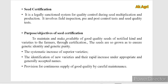The main objective of seed certification is to maintain and make availability of good quality seeds of notified kind to the farmers through seed certification. Notified varieties are nothing but the varieties which are registered with the Government of India. The objective also includes systematic increase of superior varieties, identifying new varieties, their rapid increase and supply to the farmers in the quickest possible time, and continuous supply of good quality seeds by careful maintenance of genetic purity.